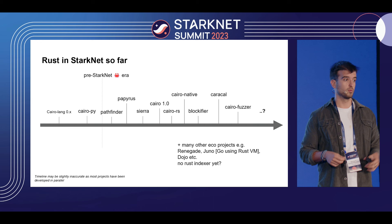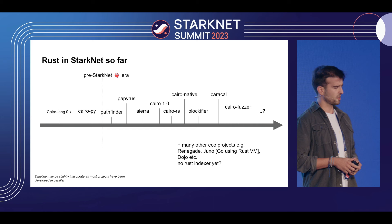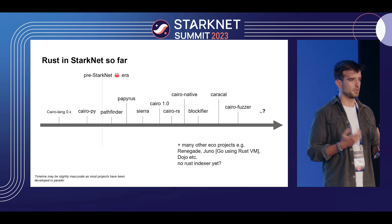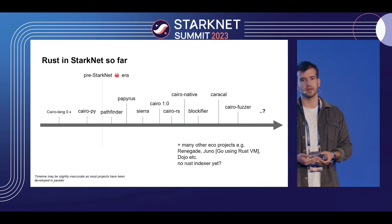That's part of how StarkNet has been hitting 50–100 TPS peaks or more. A tool I'm particularly excited about is Caracal and Cairo Fuzzer, built by two security companies — Caracal is by Trail of Bits. These plug onto readily available Rust components and give you very powerful tools. Caracal is a static analyzer: it parses your Sierra code and produces a report of known vulnerabilities. The fuzzer is a fuzzer.